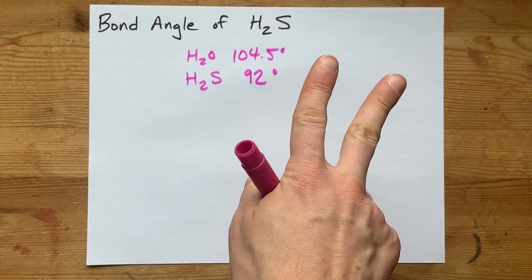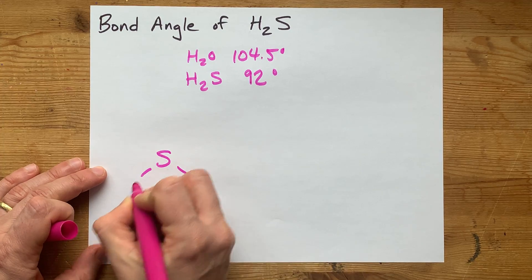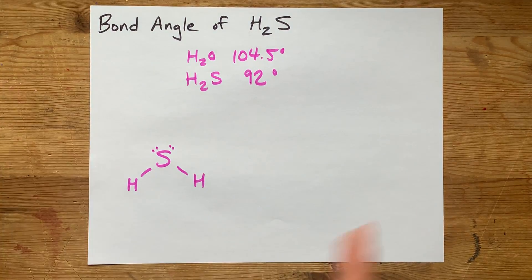I'm going to show you two ways to think about this. First, let's draw the Lewis structure for H2S so we know what we're talking about.